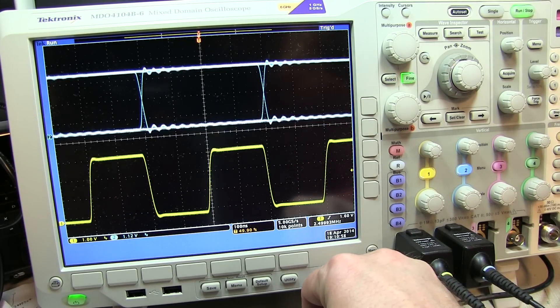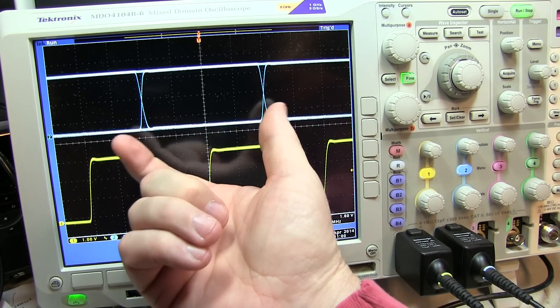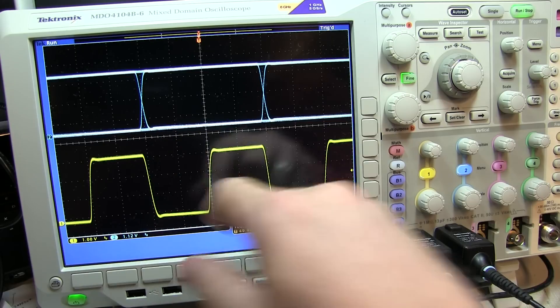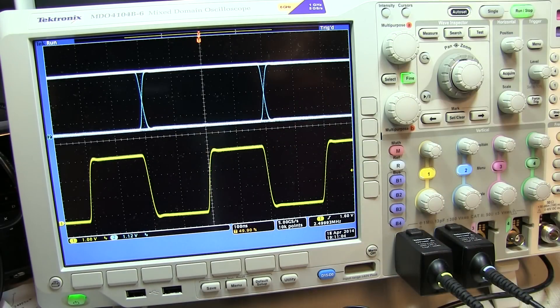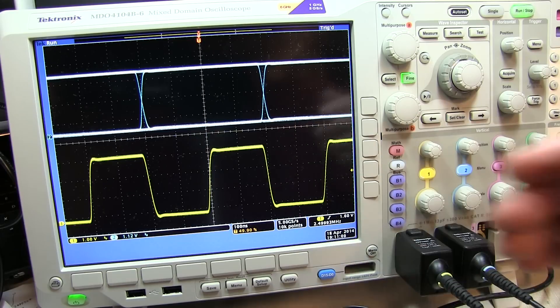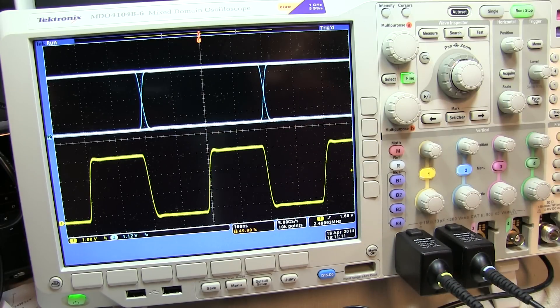So those two effects, essentially horizontal eye closure, which is really caused by jitter, and vertical eye closure, which is typically caused by signal integrity issues, reflections, terminations, other noise, ground bounce, other issues like that.